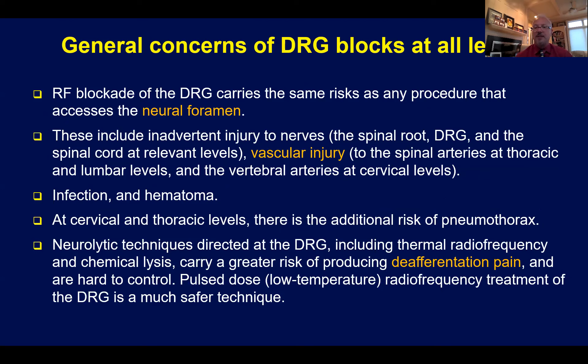What about DRG blocks? Essentially, if you can access the neural foramen, you can perform a dorsal root ganglion block using local anesthetics and likewise perform a dorsal root ganglion radio frequency using pulsed energy at 42 degrees centigrade. However, you have to always be cognizant of the fact that this injection, especially in the cervical spine, runs very close to a vascular structure. In the cervical spine, we must be cognizant not only of radicular medullary arteries, but more notably the vertebral artery, which runs in the foramen transversarium, directly juxtaposed to the neural foramen.